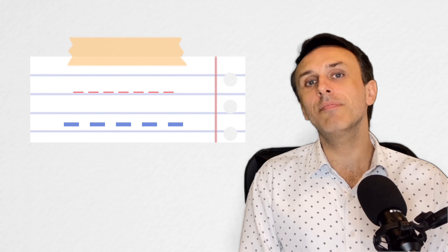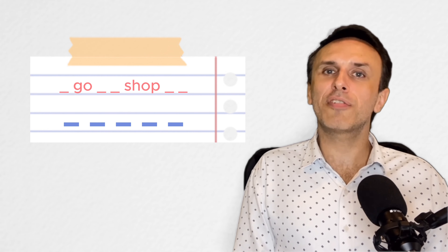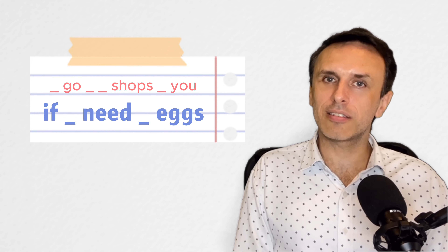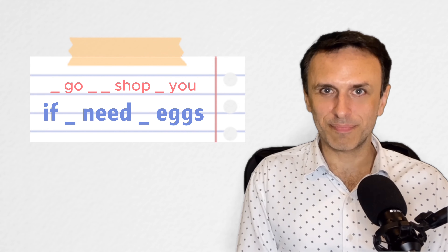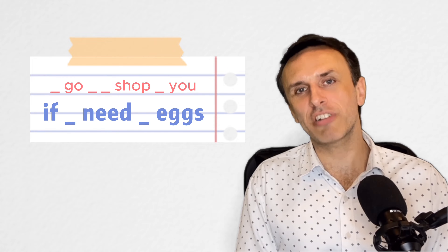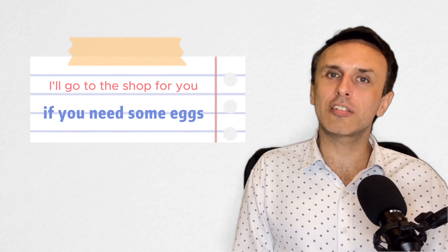Grab a pen, write down what you hear in this sentence. Ready? Here we go. I'll go to the shop for you if you need some eggs. Listen to this sentence again. How are these words pronounced? I'll go to the shop for you if you need some eggs.